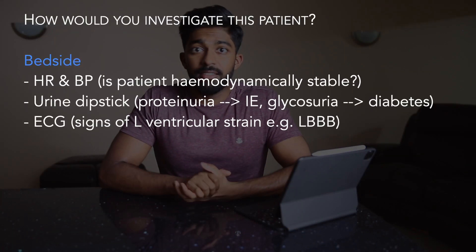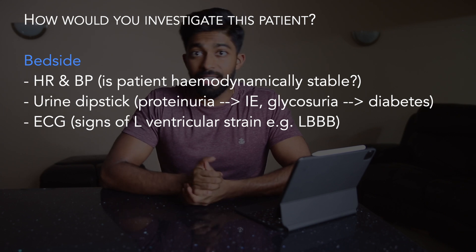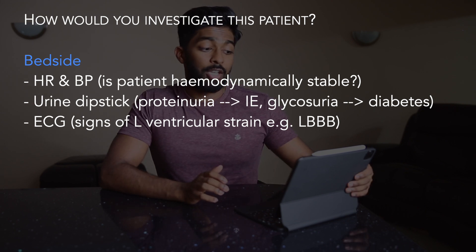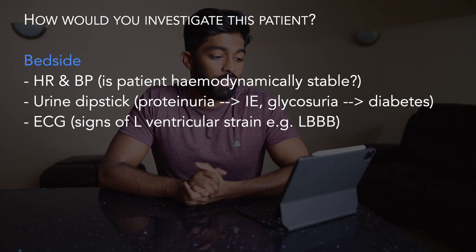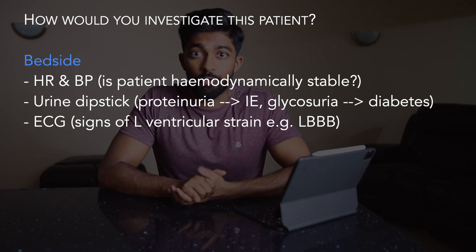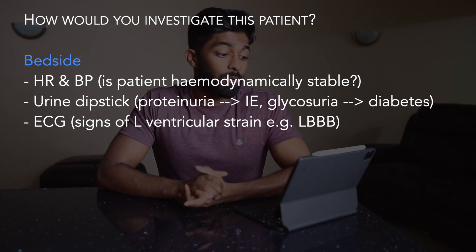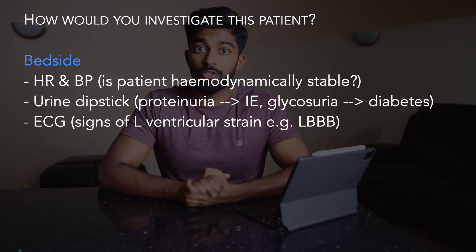Your examiner could then ask how you would investigate this patient. Try to classify your investigations: bedside tests, blood tests, imaging, and special tests, and mention why each test is relevant. I'd start with bedside tests: checking heart rate and blood pressure to confirm haemodynamic stability, a urine dipstick to look for proteinuria suggesting infective endocarditis, and glycosuria suggesting diabetes — a vascular risk factor. I'd also do an ECG to look for signs of left ventricular strain such as left bundle branch block.